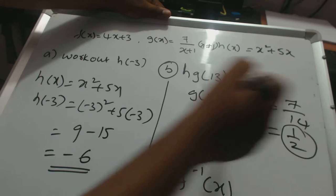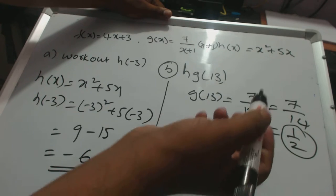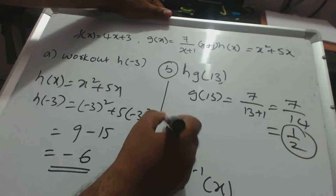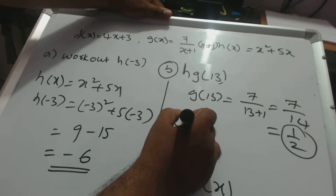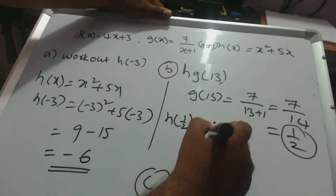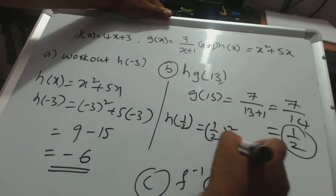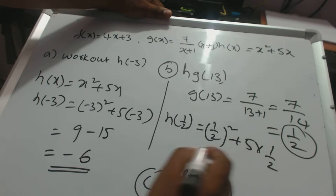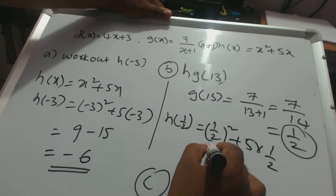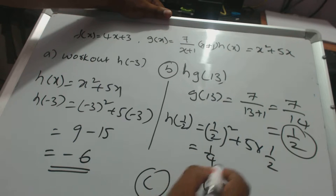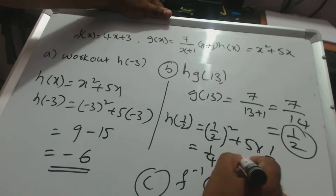g of 13 is 1 by 2, then 1 by 2 substitute in h of x. What is h of x? Then 1 by 2 squared plus 5 times 1 by 2, which is equal to 1 by 2 squared means 1 by 4 plus 5 by 2.